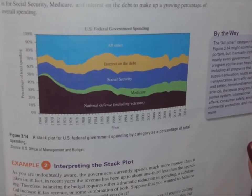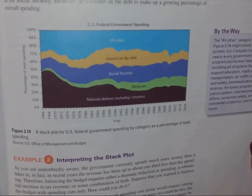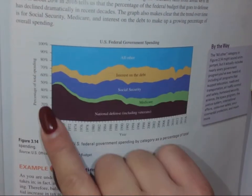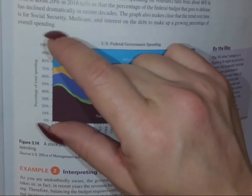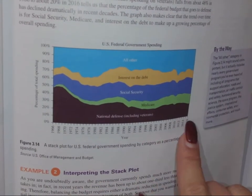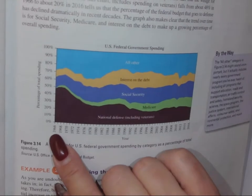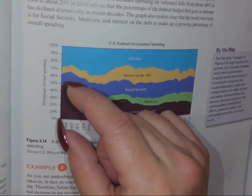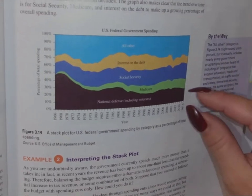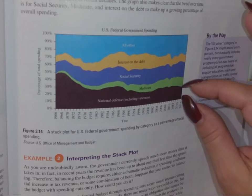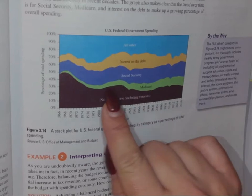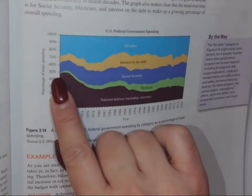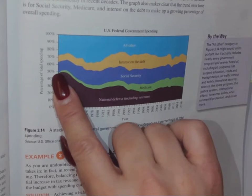Another interesting graphic is a stacked area plot of U.S. federal government spending. The full height represents 100% of the budget, and a timeline of years runs along the bottom. In 1966, national defense including veterans' affairs was roughly 44–48% of spending. By 2016, that figure dropped to around 20% of the budget.